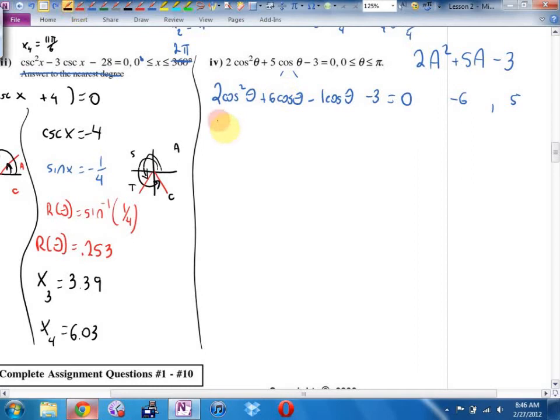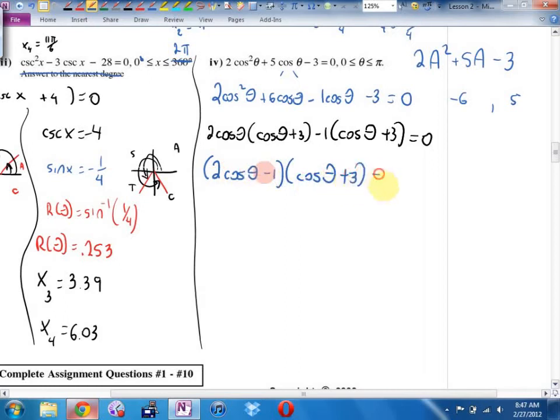Then in my mind, I group this into two terms and two terms. And I factor out a greatest common factor. GCF from the first two is going to be 2cosθ, cosθ + 3. GCF from the second two. Is there one? Not really. So we have to fall back on the obvious ones. 1 or negative 1. And I think this time I want to factor out a negative 1, because that will give me an identical bracket. So what does this actually factor into? 2cosθ - 1, cosθ + 3 equals 0.